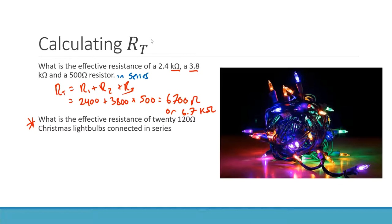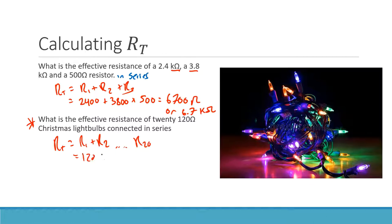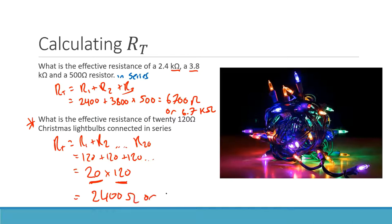First answer in chat is 2400 ohms — let's check. Anthony and Brendan both agree. RT = R1 + R2 + ... + R20 = 20 × 120 Ω. Instead of adding 120 twenty times, 20 × 120 = 2400 ohms, or 2.4 kΩ. Correct!